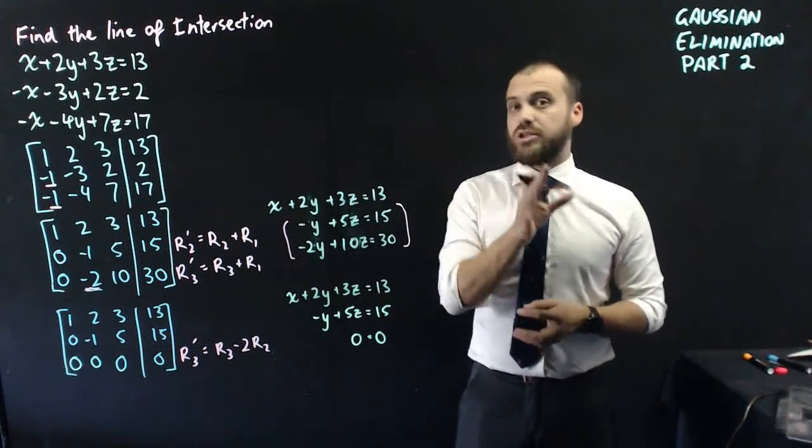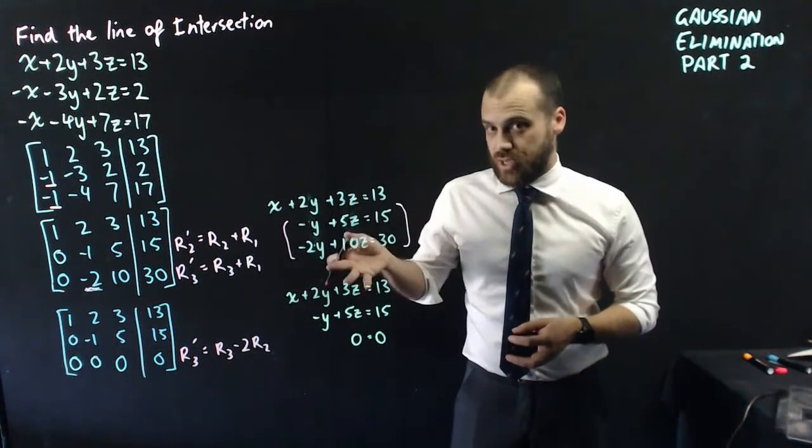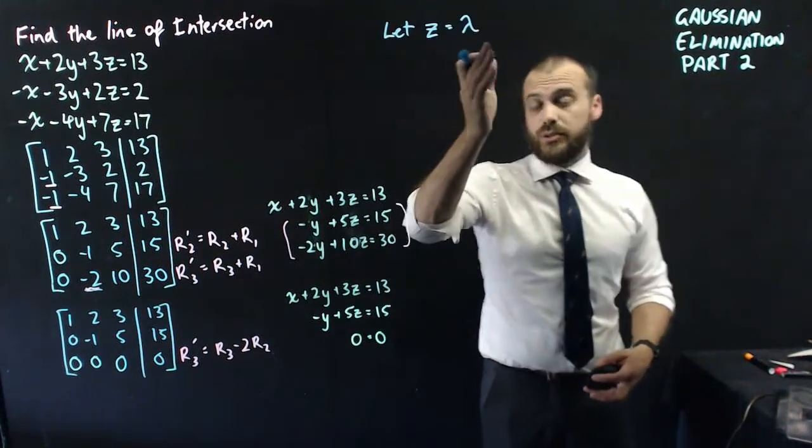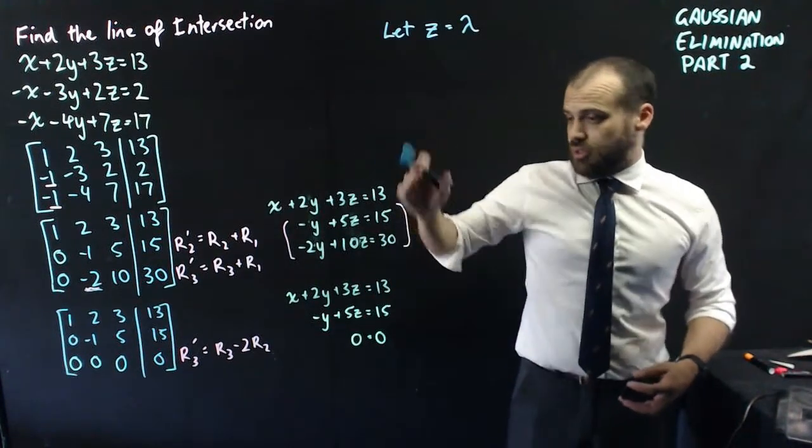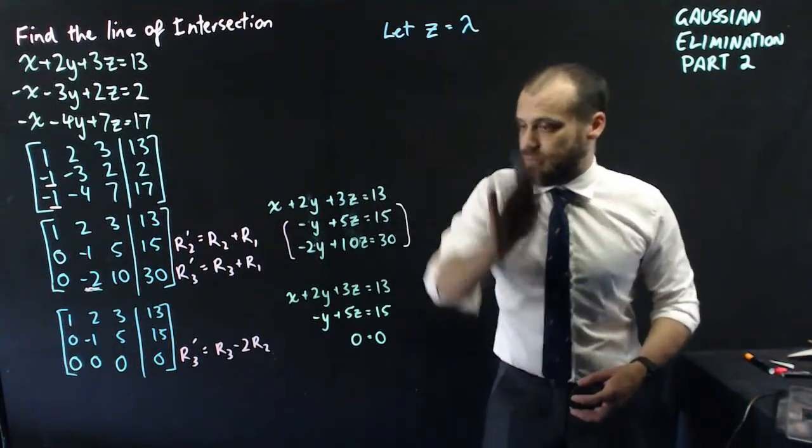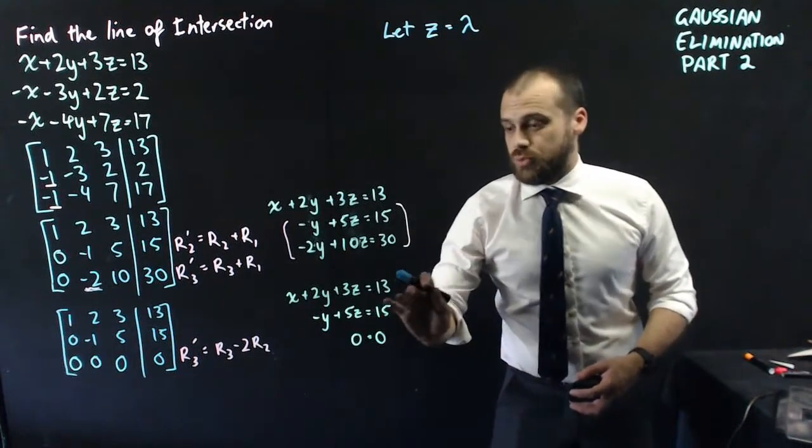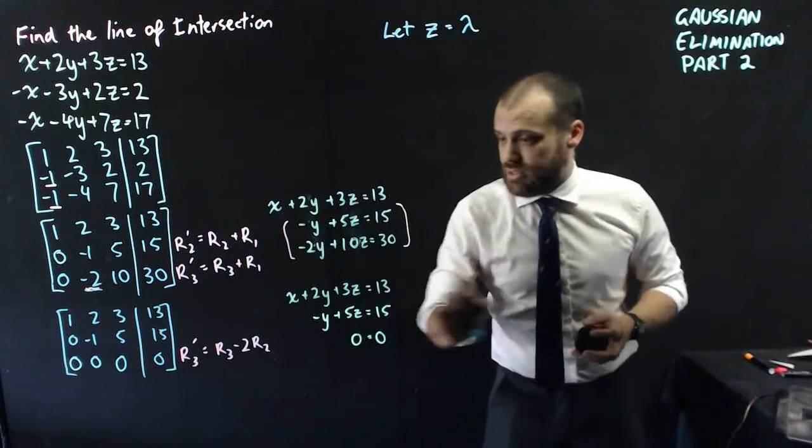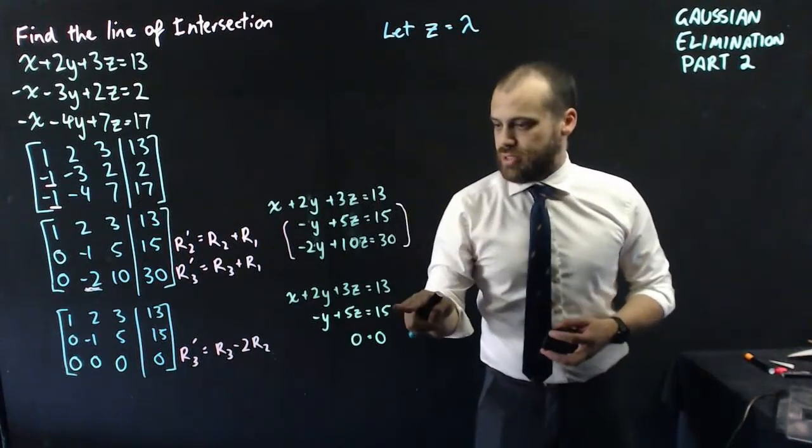I can sub in any z value, which means that I can use a parameter in place of z. Therefore, we can let z equal our parameter, lambda. Now that we've done that, we can sub lambda into this equation. And then once we've done that, we can sub whatever we get into this equation.